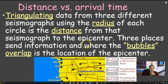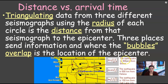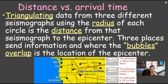But that distance is only from that one place, so the distance needs to be done from three different areas — we are triangulating. Triangulating data from three different seismographs using the radius of each circle. The earthquake is 300 kilometers from Boise, so from that one station it makes a circle — a radius around it. All they know is it is 300 kilometers from that station in some direction. Then they do the same for Helena and Salt Lake. Where these circles meet up or overlap, that is the location of the epicenter.